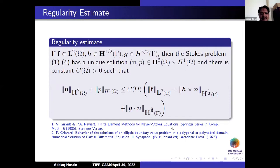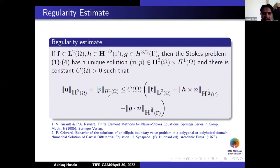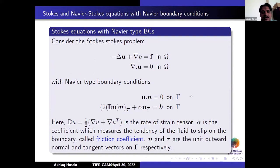There is a regularity estimate for solutions of the Stokes equation: if F is in L², H is in H¹, and G is in H^{3/2} trace spaces, then the Stokes problem has a unique solution (U, P) belonging to H² × H¹, and there exists a positive constant such that the H² norm of U plus the H¹ norm of P is bounded by the L² norm of F, the H^{1/2} norm of H×n, and the H^{3/2} norm of G·n. This estimate is found in books by Girault and Raviart and in many other references. Regularity for these problems is not an issue — its availability was one reason the authors started this work.